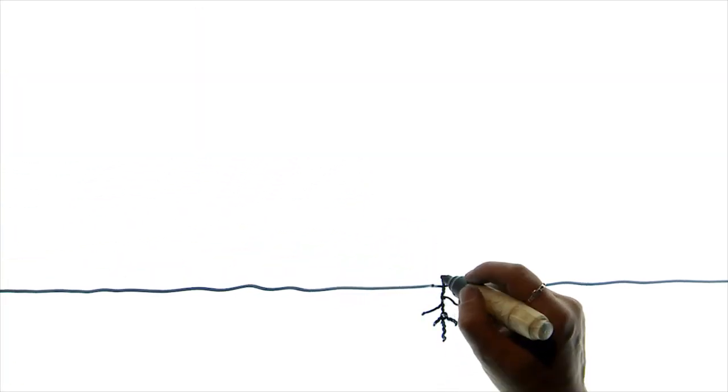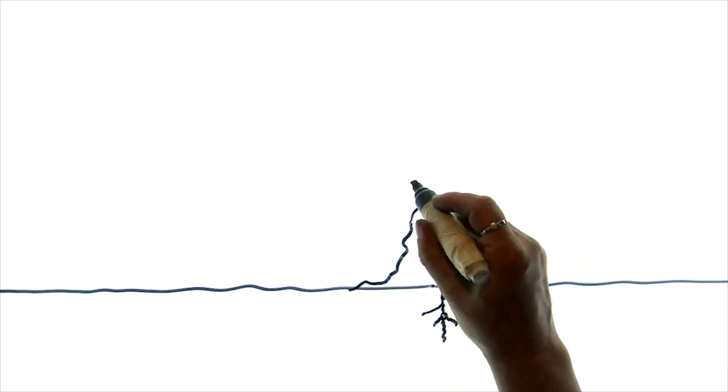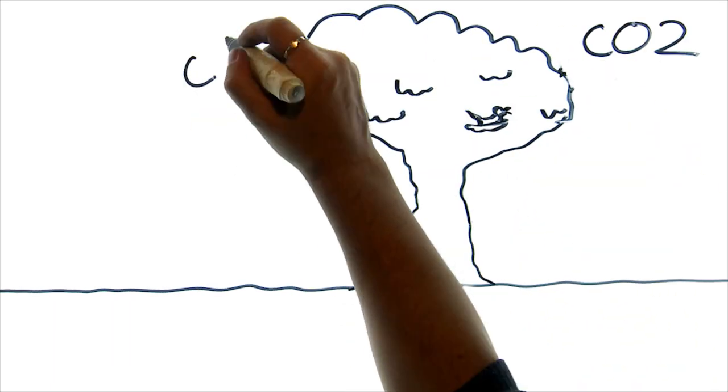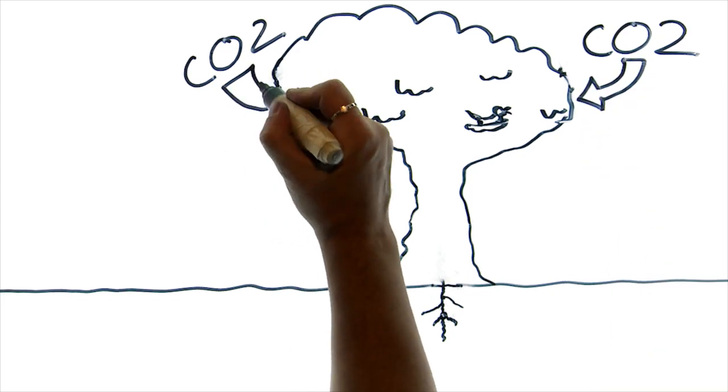Trees grow quickly, and they're amazing machines. They do incredible things because they take CO2 out of the atmosphere.